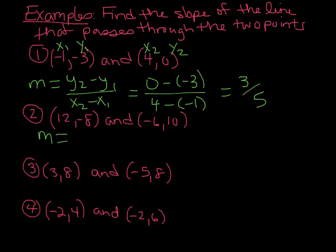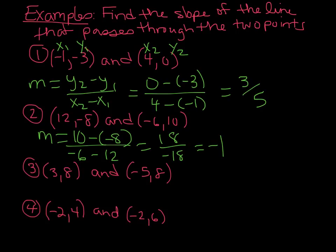For number 2, we are going to substitute in the points. I'll refer to the first point as X1, Y1 and the second point as X2, Y2 — though it doesn't really matter which point you call X1, Y1 or X2, Y2. We end up getting positive 18 over negative 18, which gives us a slope of negative 1.